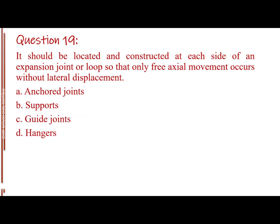Question number 19. It should be located and constructed at each side of an expansion joint or loop so that only free axial movement occurs without lateral displacement. Letter A, anchor joints. Letter B, supports. Letter C, guide joints. Letter D, hangers. The answer is letter C, guide joints.